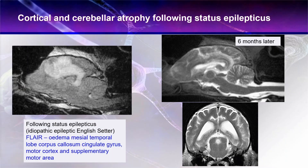Here is another example. This is an English setter that was presented in status epilepticus. It had idiopathic epilepsy and developed status epilepticus because it had very bad epilepsy and hadn't been started on treatment promptly enough. You can see the edema coming up through the temporal lobe and hippocampal region, going through the corpus callosum, through the cingulate gyrus, and right up into the motor cortex and supplementary motor area — showing where the seizure is spreading through the neuronal networks.